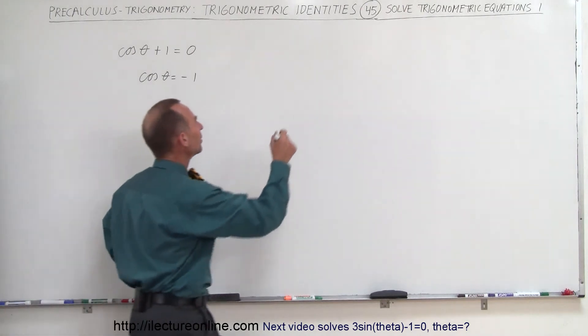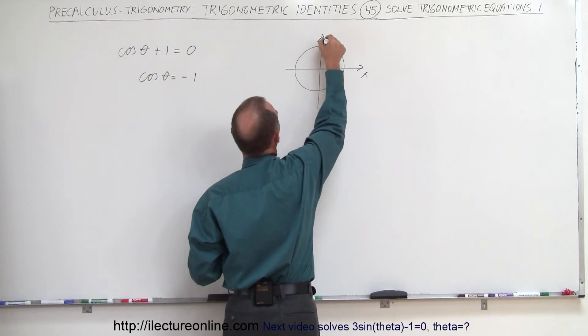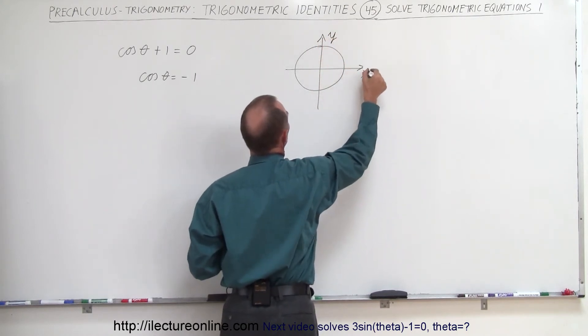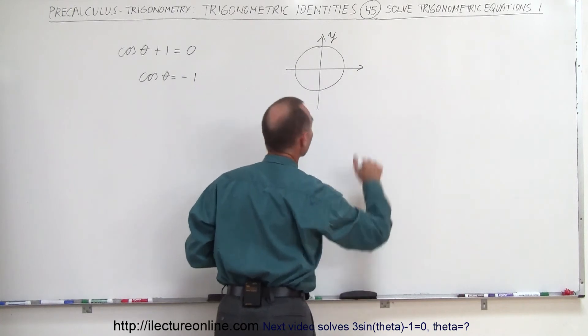We know there's only one value that fits the bill here. If we draw the unit circle, we have the x-axis here, we have the y-axis here. That's a terrible looking x. Let me try that again. Here we go.